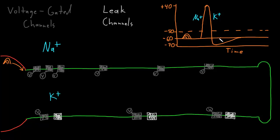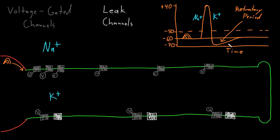The period of hyperpolarization at the end of the action potential has a couple of names. It can be called the after-hyperpolarization, and it's also called the refractory period. It's called the refractory period because during this time it's difficult or impossible to trigger another action potential in that part of the membrane. The refractory period is divided into two parts. The first is the absolute refractory period — it's absolute because the voltage-gated sodium channels, when they first close, are in the inactivated state and unable to open at any membrane potential for a brief time, so no amount of excitatory input can trigger another action potential.